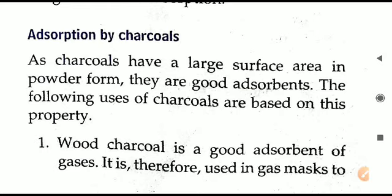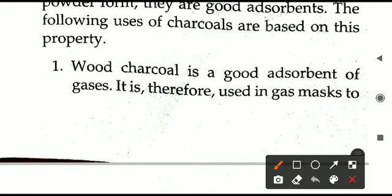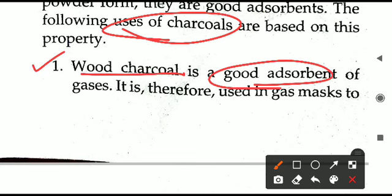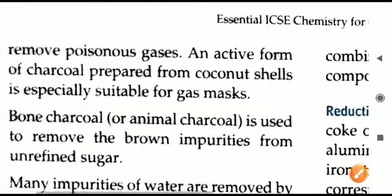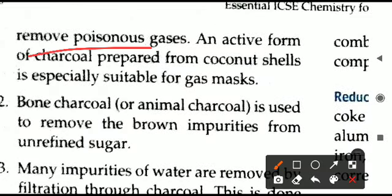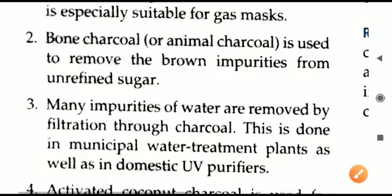Because charcoal exhibits adsorption, there are different uses of different types of charcoal. First is wood charcoal — it is a good adsorbent of gases, and because it adsorbs gases it can be used in making gas masks to purify air and remove poisonous gases. People working in polluted areas can wear these gas masks to remain safe. An active form prepared from coconut shells can also be used in making gas masks.